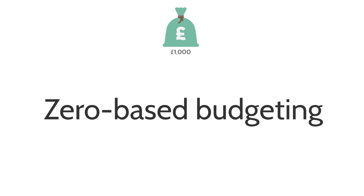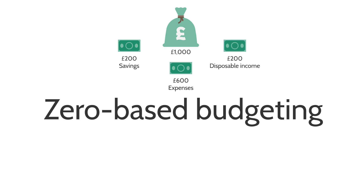We're going to assume that we've been paid £1,000 and in the last few months we've been using an incremental system — just assuming that our expenses are £600, that we can save £200, and that we need £200 in disposable income. But this time we've really broken down our expenses and income, and we looked at our disposable income and thought, well hang about, we're spending £100 a month on takeaway food when we've got plenty of food in the house and we're trying to save for a holiday. Why are we spending this much money on takeaway food? We cannot justify that.